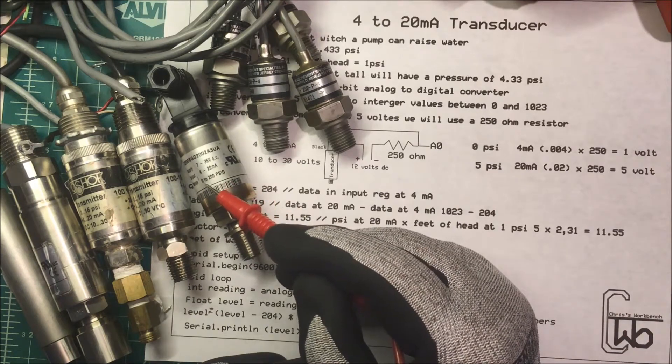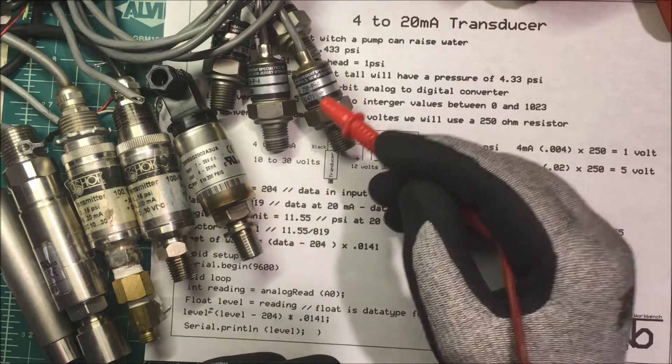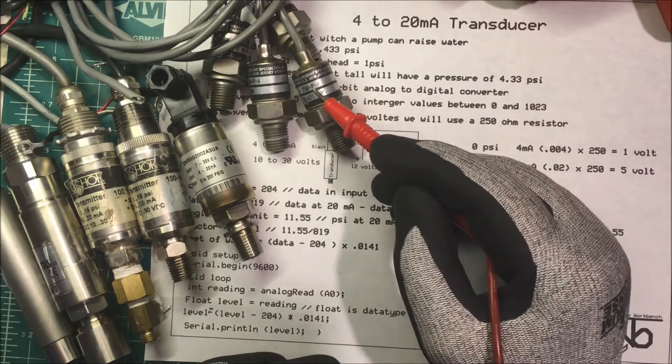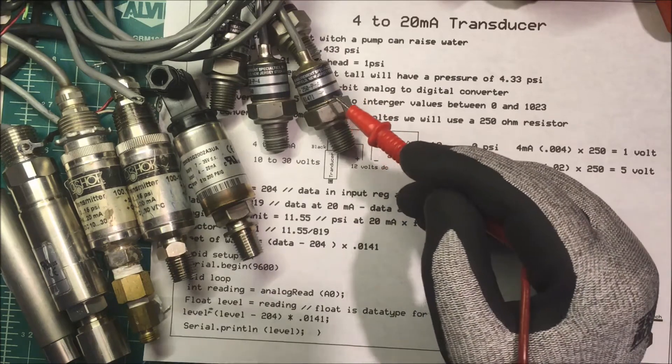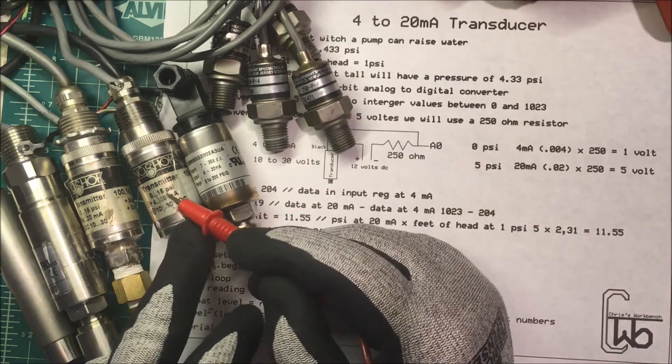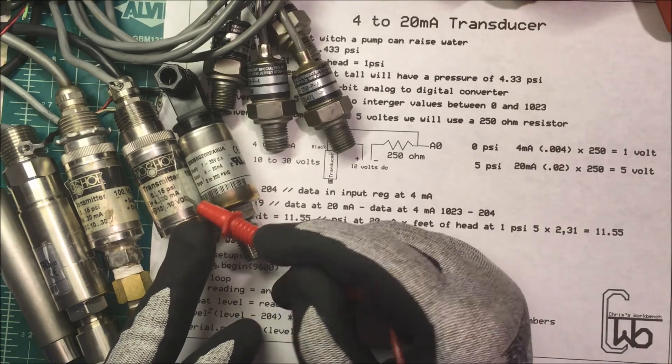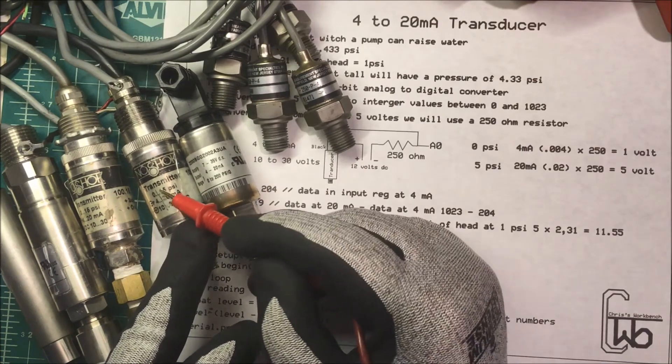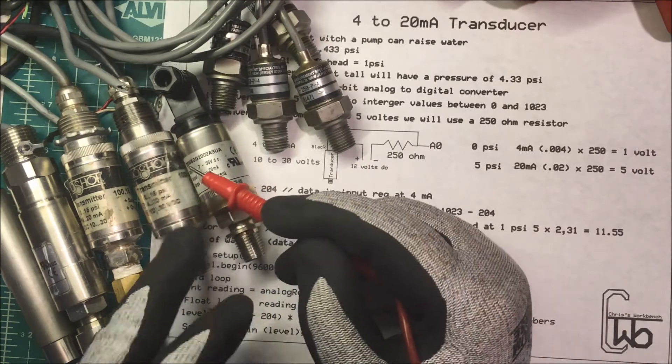So at 0 psi it puts out 4 milliamps and at 200 psi it puts out 20 milliamps. These are 250 psi, so at 250 psi it puts out 20 milliamps. These are rated from 0 to 15 psi, 4 to 20 milliamps, 10 to 30 volts DC. So at 0 psi it puts out 4 milliamps and at 15 psi it puts out 20 milliamps.